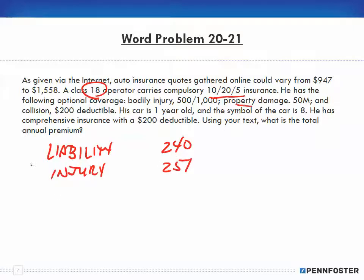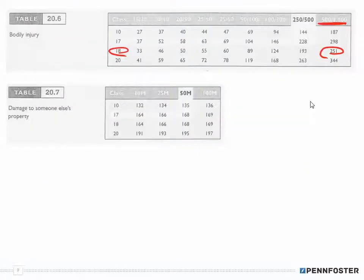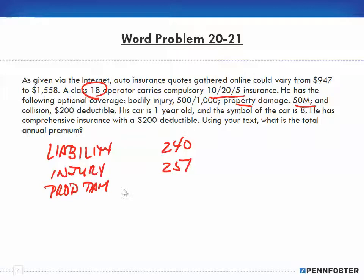Next is property damage, and that's for $50,000. Coming down to the property damage table, the class is still 18, so that's $168.